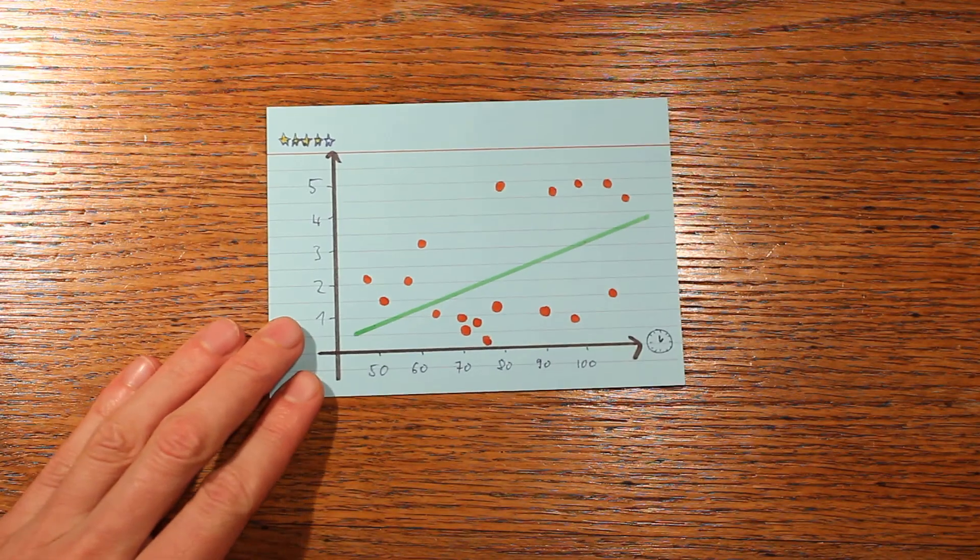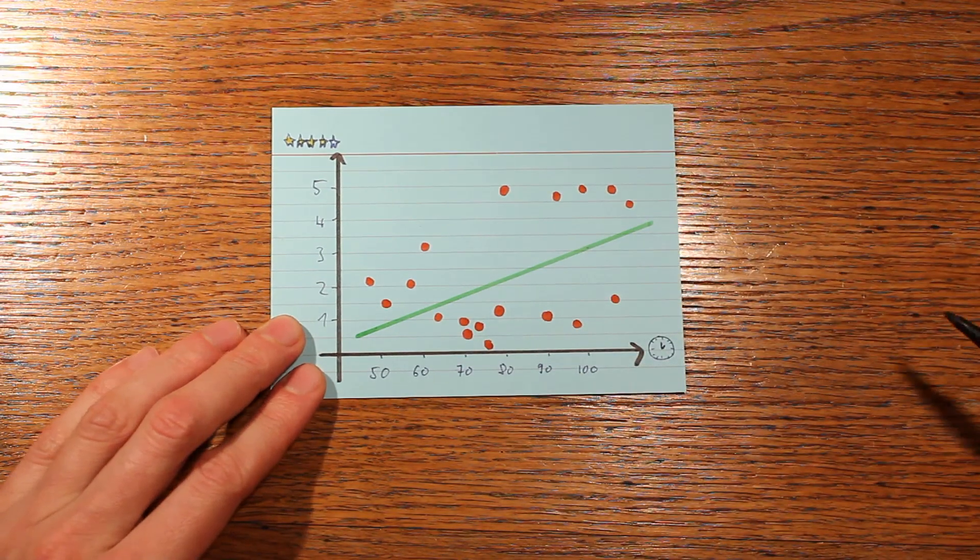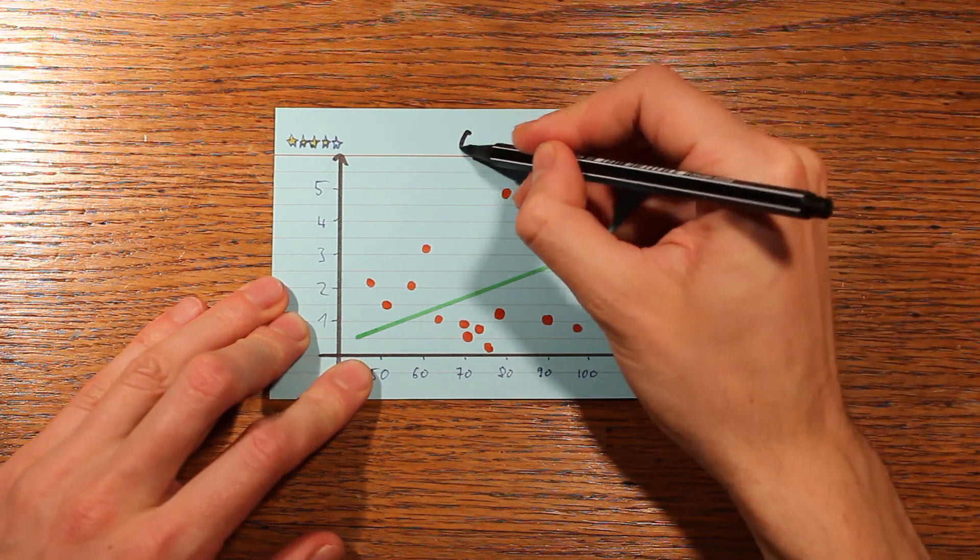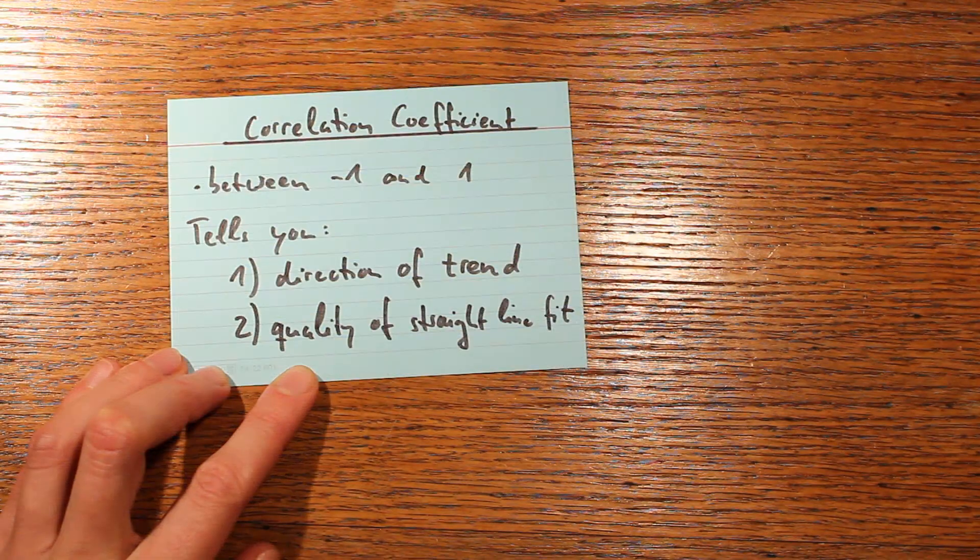But in this example here, the points are scattering a lot around a line. And then we'd say that the correlation is weaker. It's actually just 0.46 in this example. So the correlation coefficient's magnitude tells you how well your data scatters around a straight line.